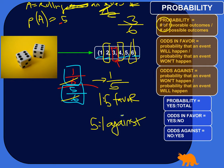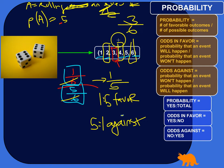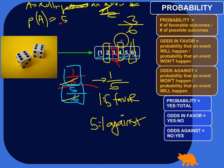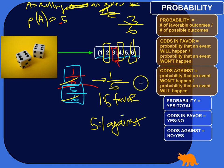Probability is just the comparison between the number of outcomes — favorable outcomes versus the total possible outcomes. Odds are comparisons of probabilities. Odds in favor are the probability that an event will happen over the probability that an event won't happen. And odds against are just the reverse of that: the probability that an event won't happen versus the probability that an event will happen.